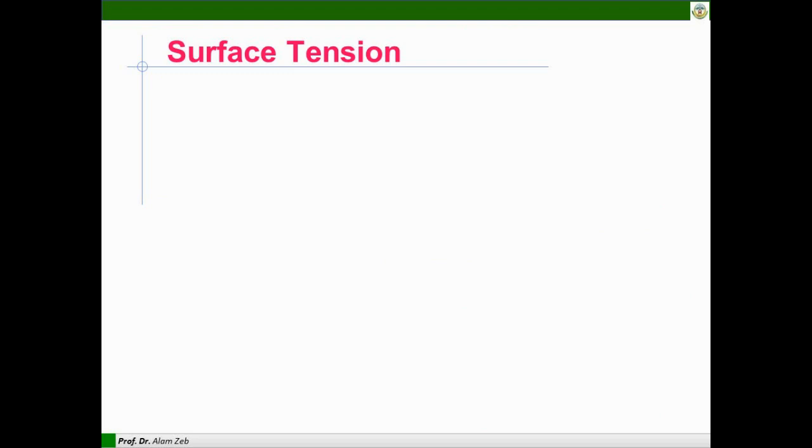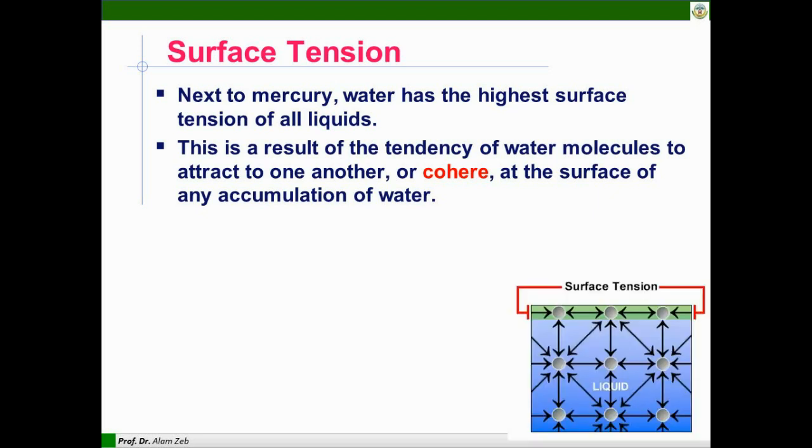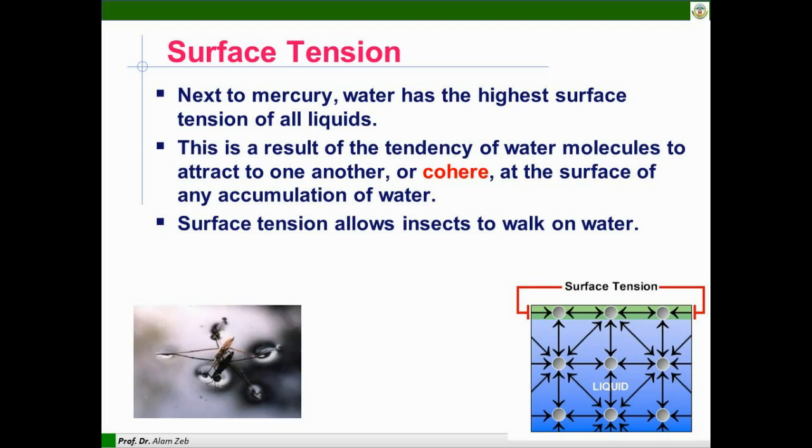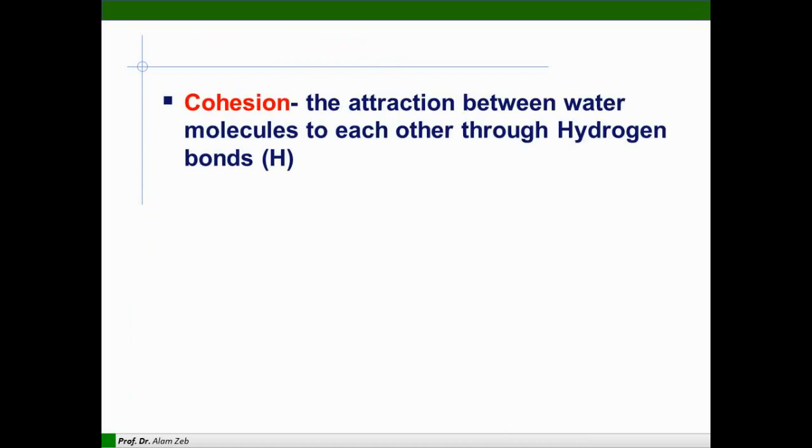Next property is called surface tension. Next to mercury, water has the highest surface tension of all liquids. This is the result of a tendency of water molecules to attract one another or cohere at the surface. At the surface, molecules of a liquid are attracted from the lower side. Surface tension allows insects to walk on water and the interaction between hydrogen bonding is very strong.